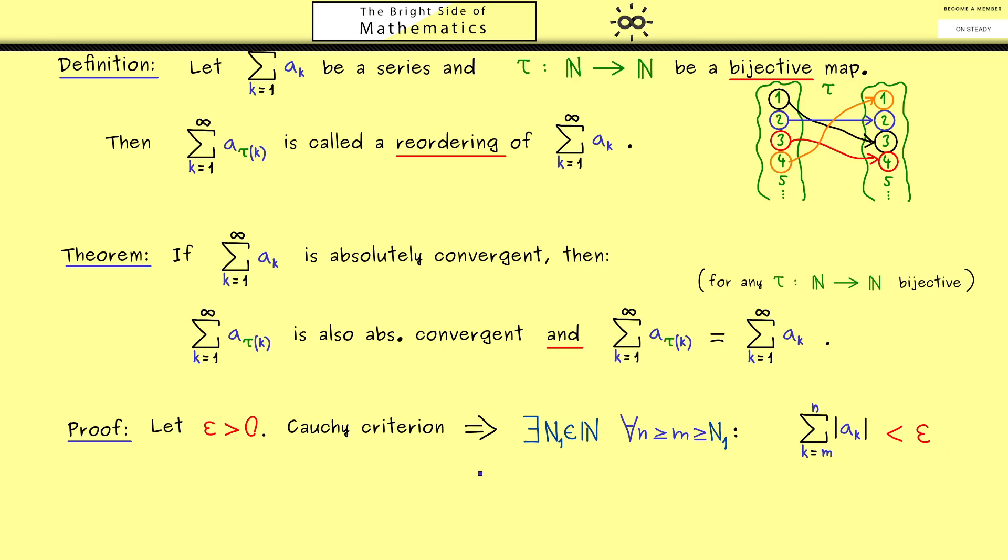Using this we can show on one hand that this series is also absolutely convergent, and on the other hand that this equation holds. Both proofs work similarly, so I'll show you that the limits coincide. More concretely, we want to show that the distance from the limit to the partial sums, where we have tau k, is less than epsilon.